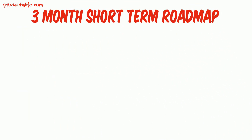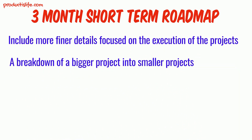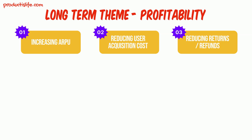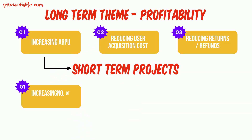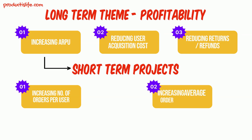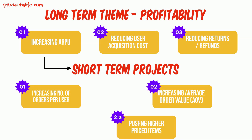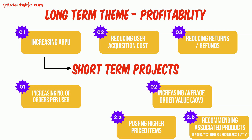The short-term roadmap has much more finer details like TAM, effort estimation, impact estimation, etc. Taking forward the long-term roadmap example, if one of the goals is to increase ARPU, you can achieve that by increasing the number of orders from a user, or by increasing the average order value. You can increase the average order value by pushing users to buy higher-priced items by highlighting USPs of quality and service, or by recommending associated products — for example, if you buy X, then you should also buy Y. To decide which approach to focus on is when you get into the finer details like TAM, effort estimation, impact estimation, and complexity.